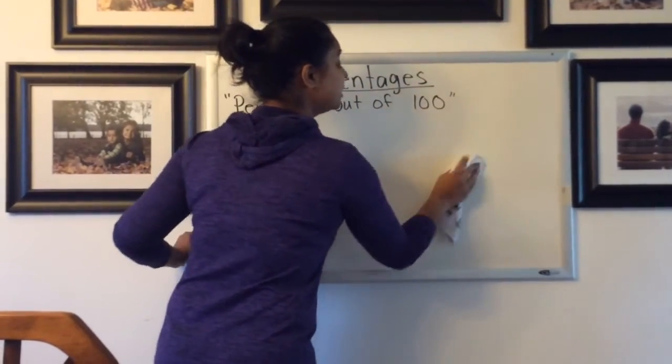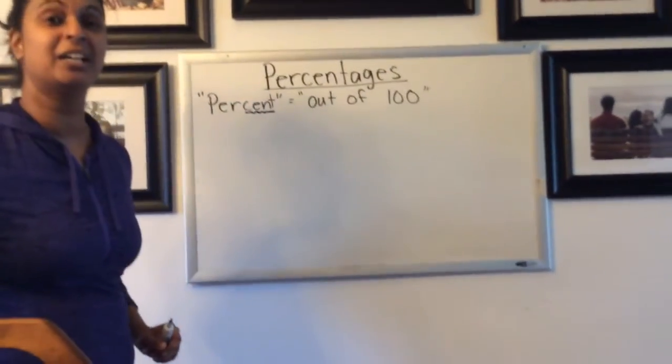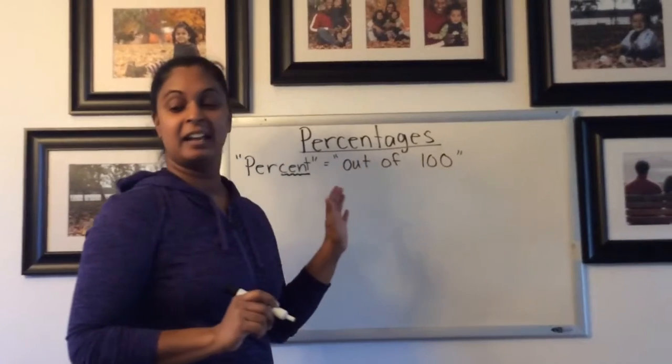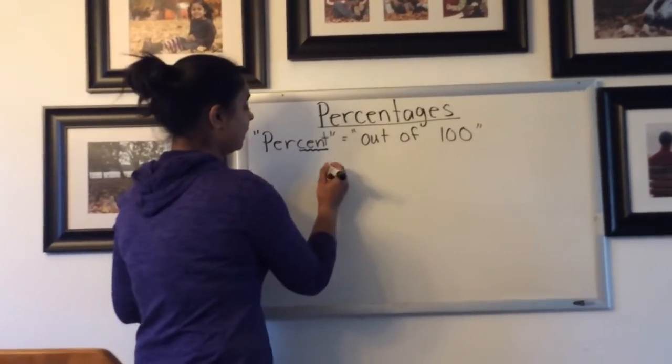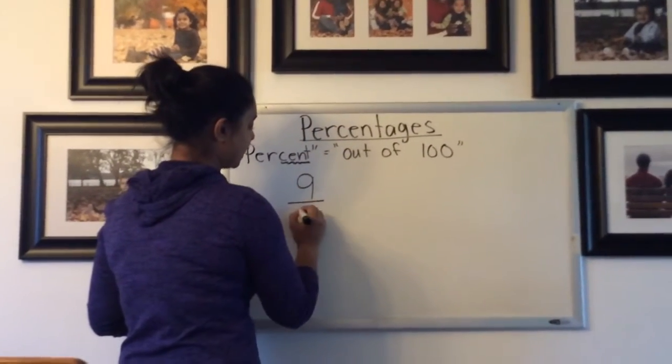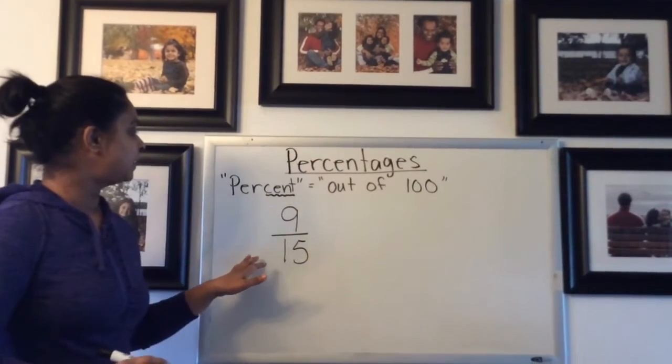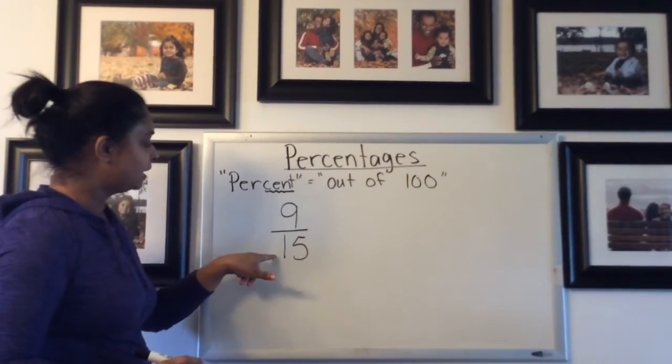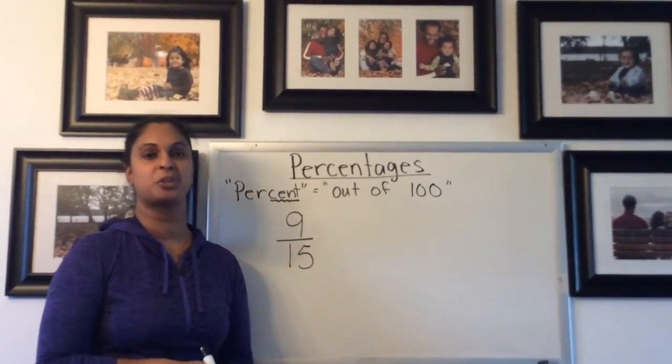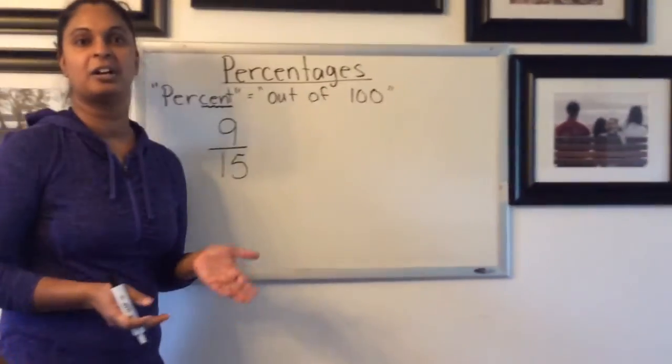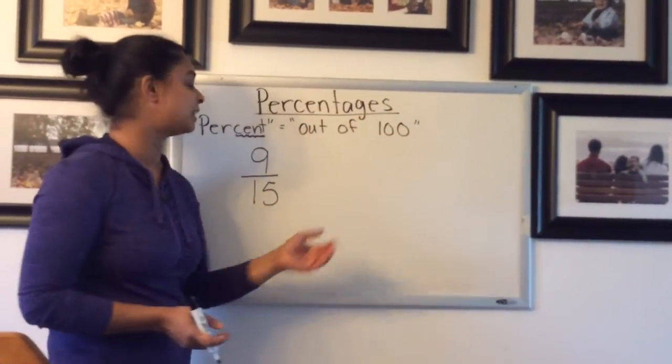Now here's where it's going to get even trickier. You may see a fraction, for example 9 out of 15. If we look at this number, there's nothing to multiply 15 by to get us to 100. So how are we going to get this denominator of 100 that we need for a percent?